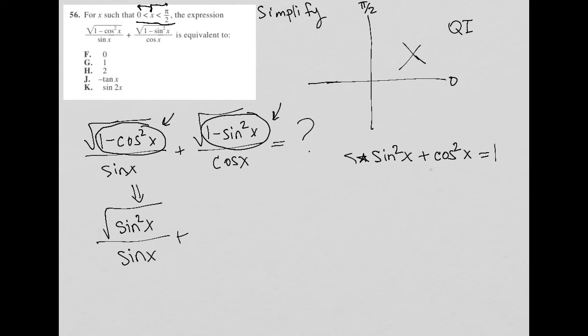When I rearrange this equation into 1 minus sin squared x, what I get there is the cos squared of x. So my numerator will become the square root of the cos squared of x over cos x.